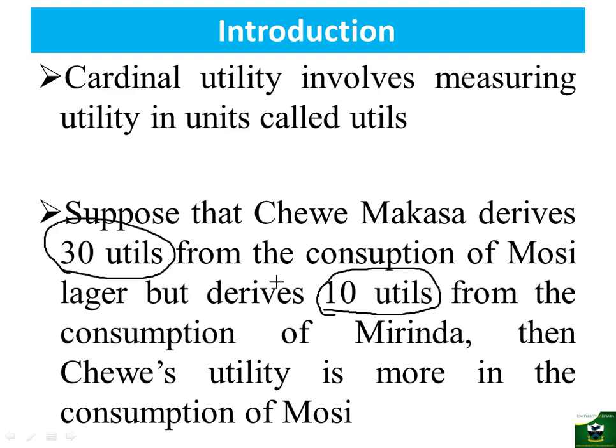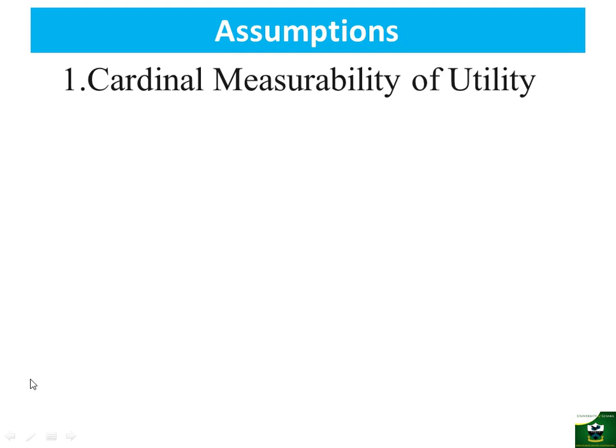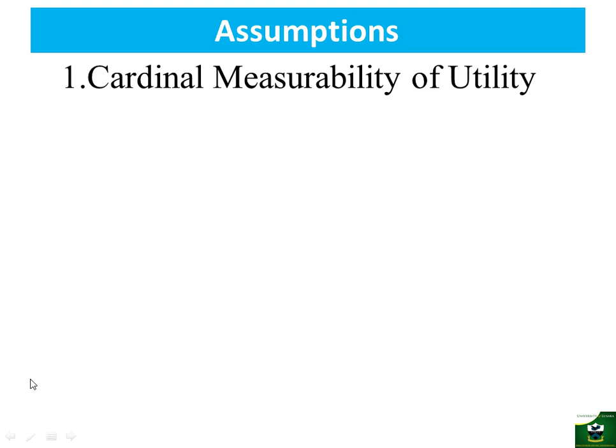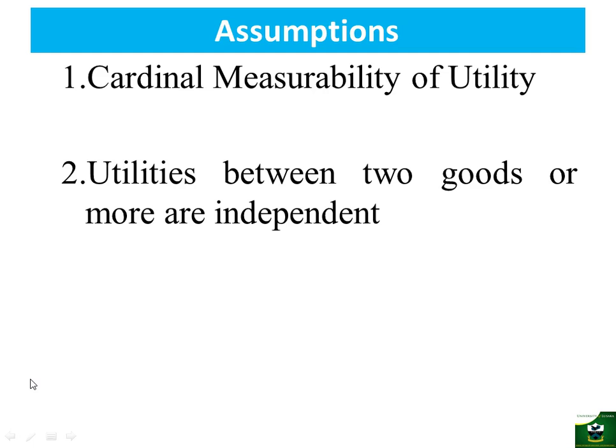Let's look at some assumptions we make under the cardinal approach. The first assumption is the cardinal measurability of utility. Recall we said that under cardinal we measure utility using units called utils, and this will allow us to compare different utility levels among different consumers. The second assumption is that utilities between two or more goods are independent, meaning we can add utility levels for a given consumer and come up with a total utility.